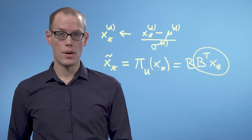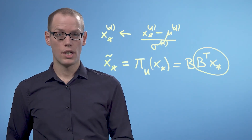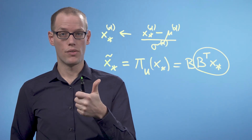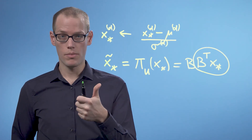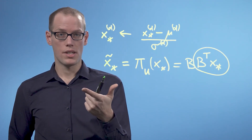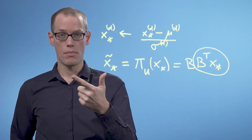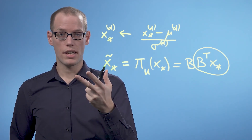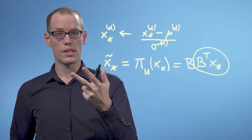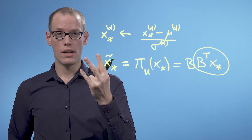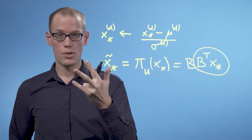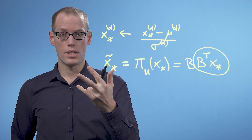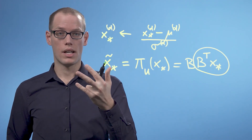In this video, we went through the steps of PCA. First, we subtract the mean from the data and center it at zero to avoid numerical problems. Second, we divide by the standard deviation to make the data unit-free. Third, we compute the eigenvalues and eigenvectors of the data covariance matrix. And finally, we can project any data point onto the principal subspace that is spanned by the eigenvectors belonging to the largest eigenvalues.